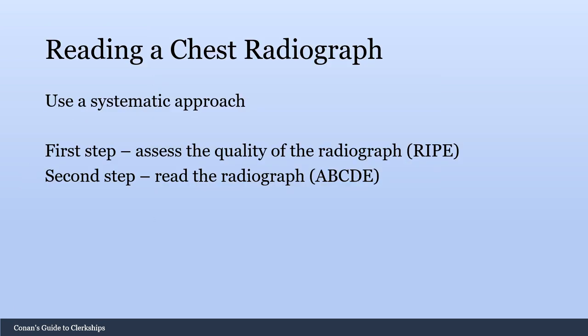When reading a chest x-ray, you always want to use a systematic approach, and this really revolves around two mnemonics: the RIPE mnemonic and the ABCDE mnemonic. The RIPE mnemonic assesses the quality of the radiograph, because you can't make an accurate diagnosis if you have a poor quality film. The ABCDE mnemonic is a sequential order for how you can read the radiograph each time so that you don't miss things.